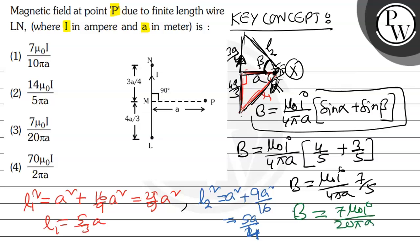So the final answer is 7μ₀I by 20πa. This is your final answer. If you see my options, 7μ₀I by 20πa, this is the third option. This is correct. Hope you understood the question and wish you good luck. Thank you.